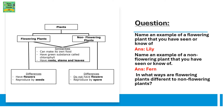In what ways are flowering plants different from non-flowering plants? Plants are of two types: flowering plants and non-flowering plants. They have a few similarities — they can make their own food, they have a green substance known as chlorophyll, and they have roots, stems, and leaves. But there are also differences: flowering plants have flowers and reproduce by seeds, whereas non-flowering plants do not have flowers and reproduce by spores.